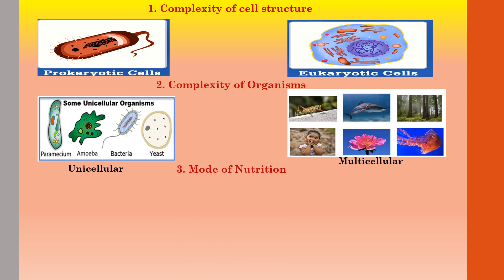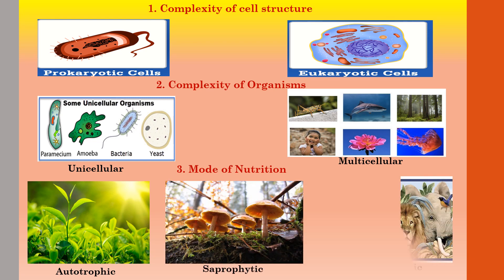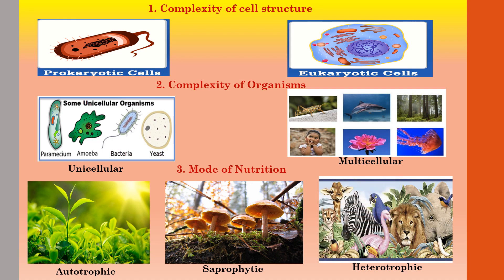The third criteria is mode of nutrition. Based on this, organisms are divided into three groups: autotrophic organisms, saprophytes, and heterotrophs. Autotrophs are those organisms which can prepare their own food — for example, plants. Saprophytes depend on dead and decaying organic matter for food. Heterotrophs depend on other organisms for food.